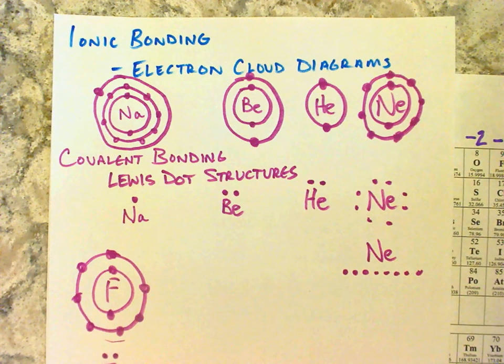So covalent bonding, we still deal with these position of electrons. So that hasn't changed at all. And electron cloud diagrams are still totally legit. They're still totally great. But we also introduced this new thing. And this new thing are called Lewis dot structures.